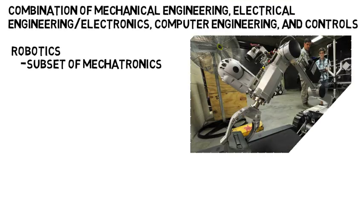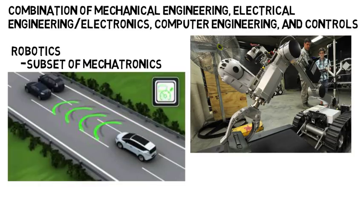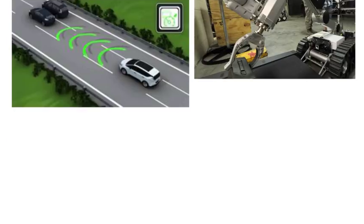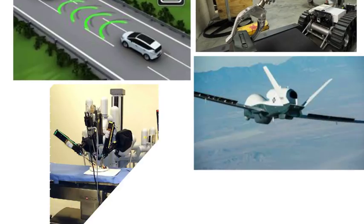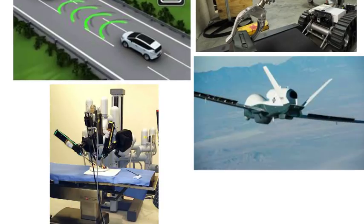When you hear robotics, don't just think of the typical kind of robots you probably envision. It includes self-driving cars with their sensing and control systems, unmanned aircrafts, automated medical equipment, manufacturing machines and processes, and much more. When you hear of robotics or mechatronics, just realize how much this encompasses.